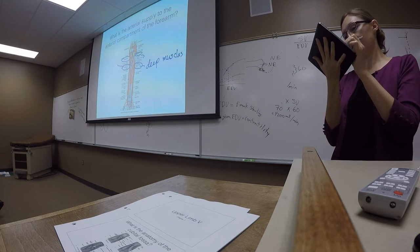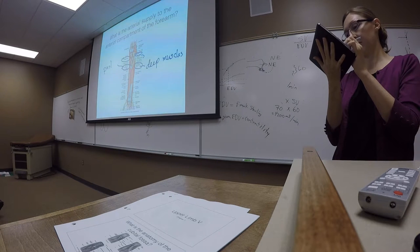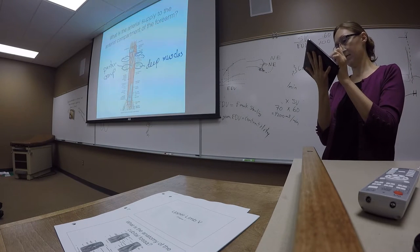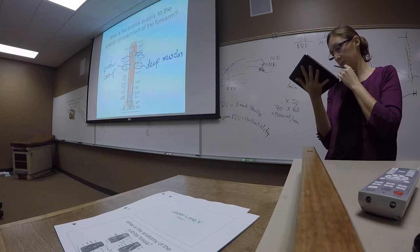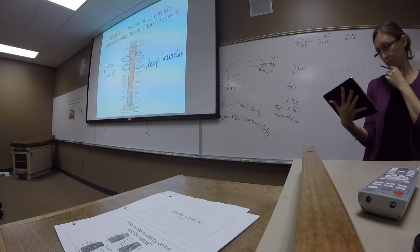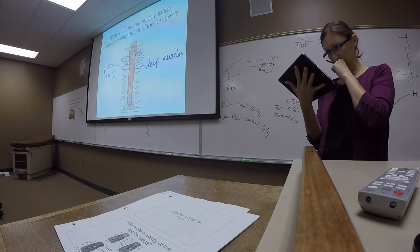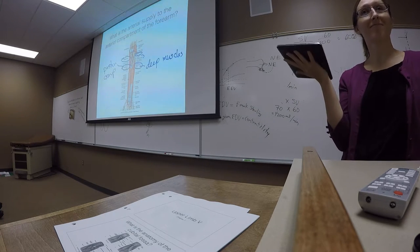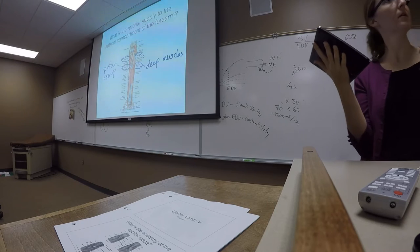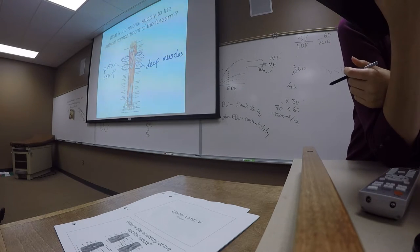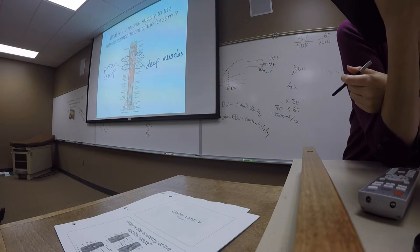The posterior interosseous artery moves into the posterior compartment, and the ulnar artery continues into the anterior compartment. The anterior interosseous artery supplies the deep muscles of the anterior compartment.